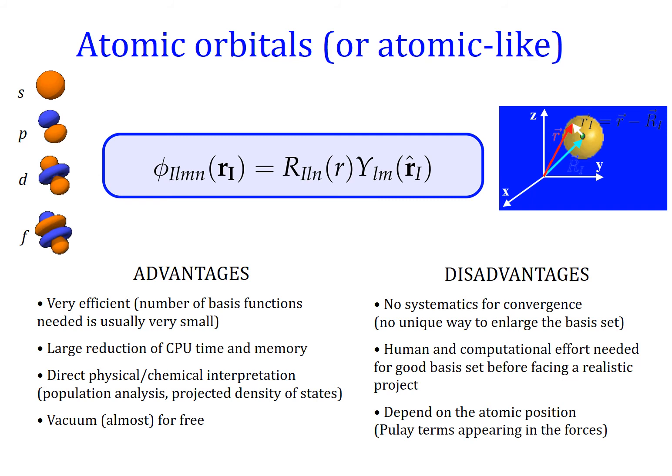There are other advantages, but the main disadvantage of atomic orbital basis sets is the lack of systematics for convergence. It is not obvious how to increase or grow the basis set in order to improve the quality of results in an efficient and systematic way. There is quite a lot of accumulated experience, but it is not as systematic as other basis sets.